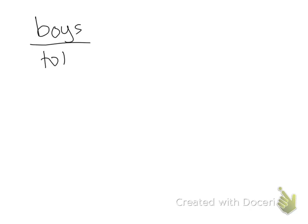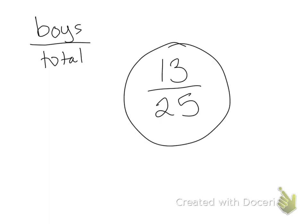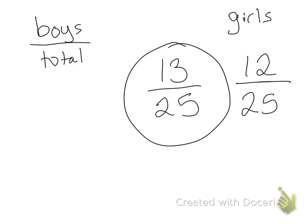If I wanted to write a fraction for the number of boys in the class over the total class, let's say we have 13 boys and 25 students total — so my fraction would be 13 over 25. For girls, we have 12 girls out of 25 students total, so that fraction is 12 over 25. And that's it for today's lesson. Good luck on your homework.